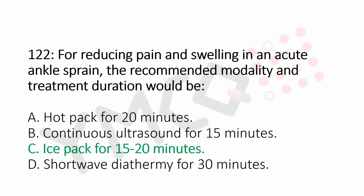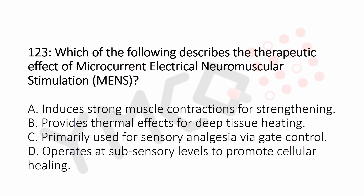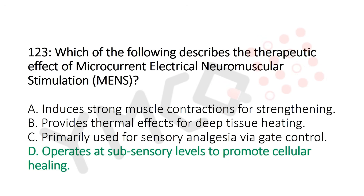Question number 123: Which of the following describes the therapeutic effect of microcurrent electrical neuromuscular stimulation (MENS)? Option A: induces strong muscle contraction for strengthening. Option B: provides thermal effect for deep tissue heating. Option C: primarily used for sensory analgesia via gate control. Option D: operates at subsensory level to promote cellular healing. And the answer is Option D: operates at subsensory level to promote cellular healing.